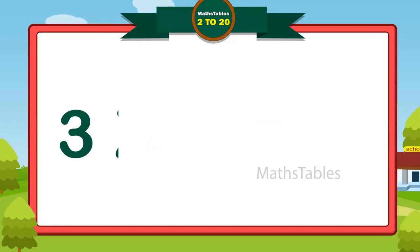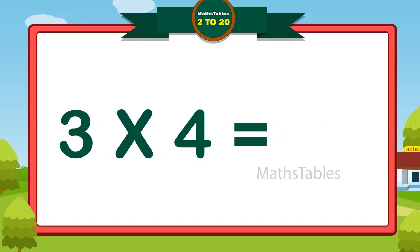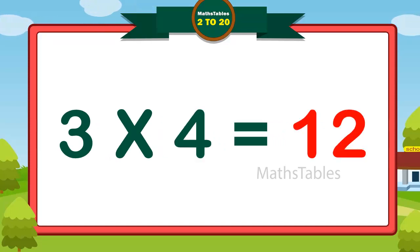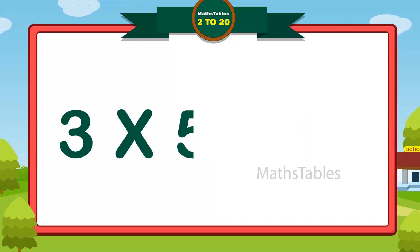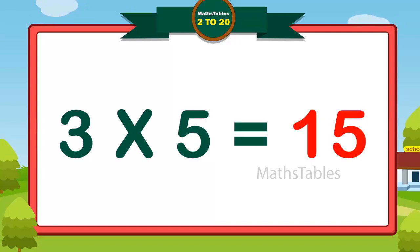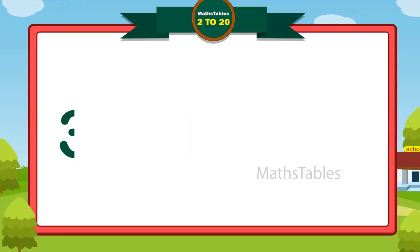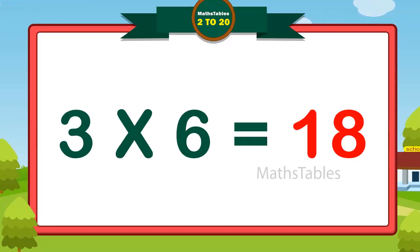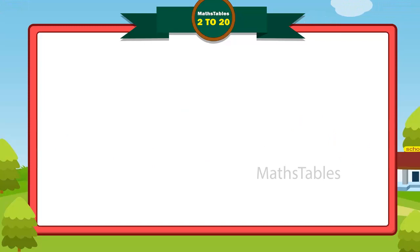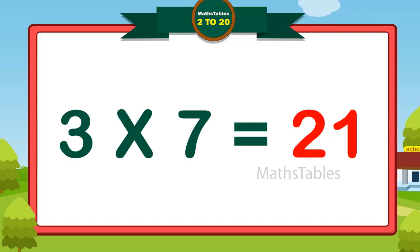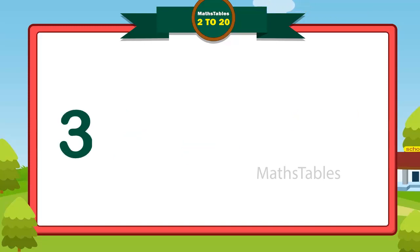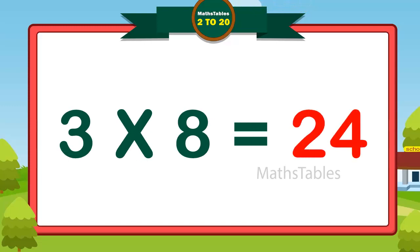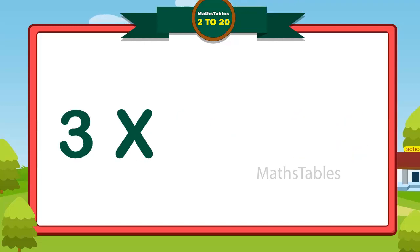Three fours are twelve, three fours are twelve. Three fives are fifteen, three fives are fifteen. Three sixes are eighteen, three sixes are eighteen. Three sevens are twenty-one, three sevens are twenty-one. Three eights are twenty-four, three eights are twenty-four. Three nines are twenty-seven, three nines are twenty-seven.